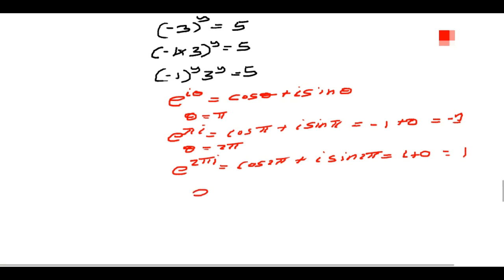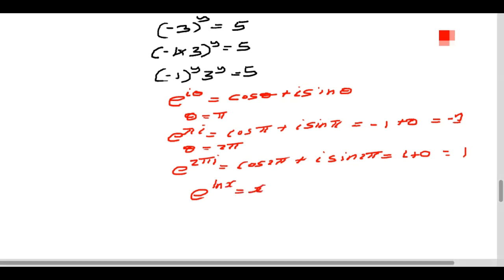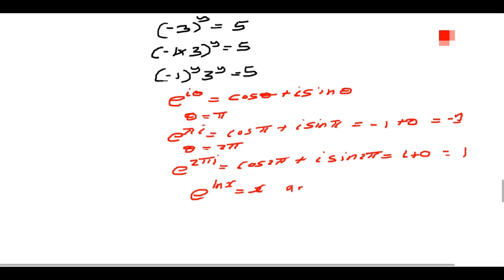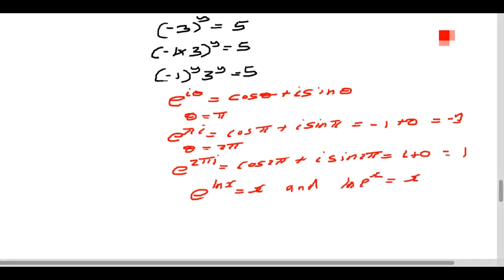When you use the exponential inverse function: e^(ln x) equals x, because the natural log is the inverse of the exponential function. Similarly, ln(e^x) equals x according to the laws of logarithms, because the power becomes the coefficient of the log, and ln of e is 1.